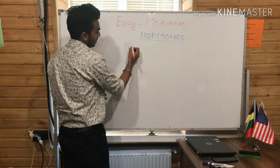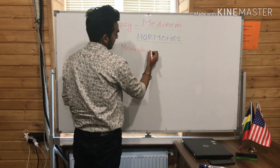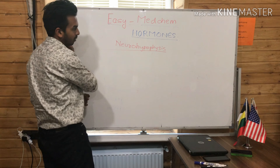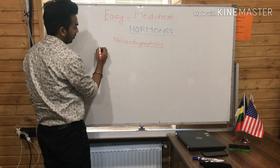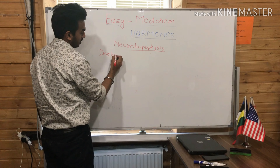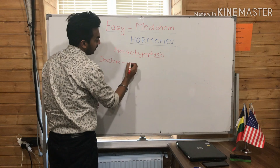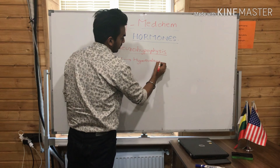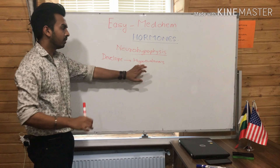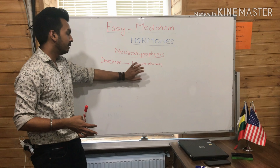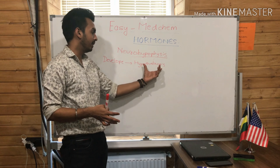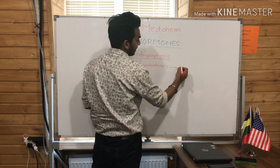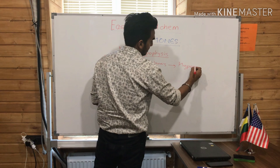The seventh one is the Gonadotropic Hormone, and it will target towards the gonads of the human body. Now we will discuss the hormones which are secreted from the neurohypophysis. The neurohypophysis is actually a part of the hypothalamus, so the hormones of the neurohypophysis do not develop at the level of the neurohypophysis itself.